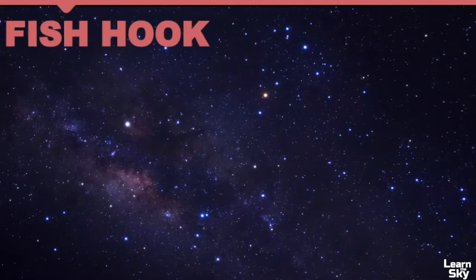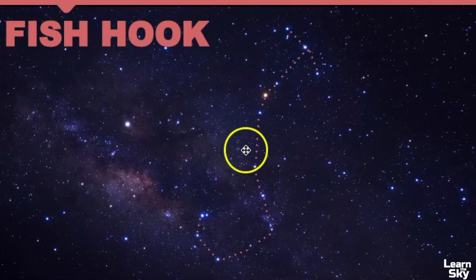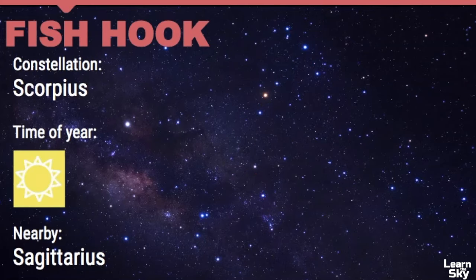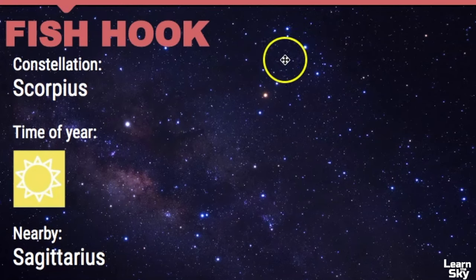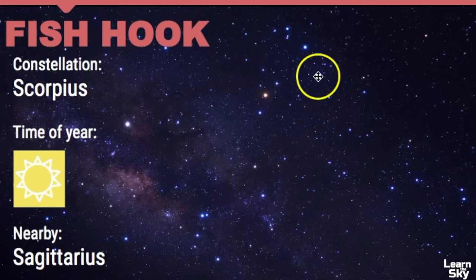Our next summer asterism is called the Fish Hook in some parts of the world, and this is what it looks like in the sky. You can see why it is called the Fish Hook because it certainly looks like one. The Fish Hook is really a part of the constellation known as Scorpius. There are some other constellations nearby such as Sagittarius, but this Fish Hook is a very large pattern in the sky and it's definitely one of my favorites to point out because it has a lot of different celestial objects within its boundaries.